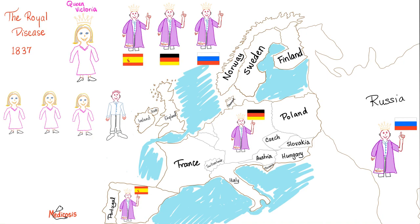Hemophilia is called the royal disease because Queen Victoria's daughters were carriers for hemophilia B — not A, but it's okay. Both hemophilia A and B are X-linked recessive diseases. Please watch my previous video to learn about this medically relevant dynasty.